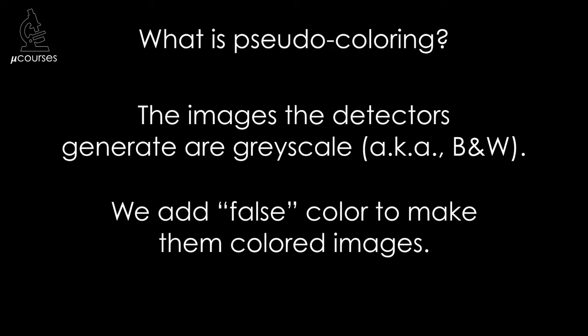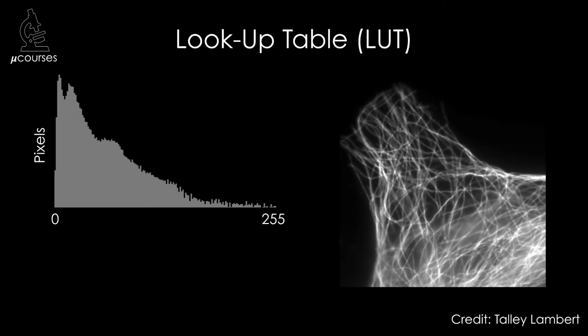So the images that these detectors generate are grayscale or black and white images, and if we want them to be colored, then we use digital image processing to add false color to the images. A pseudocolored image is simply an image in which the grayscale values have been replaced with color.